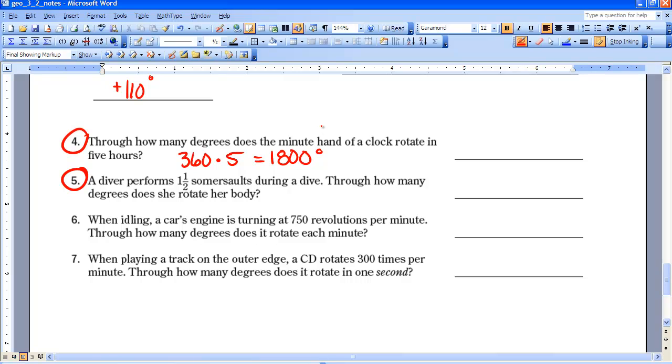And let's look at number five. A diver performs one and a half somersaults during a dive. Through how many degrees does she rotate her body? So we know a full rotation is 360 degrees. Times one and a half, that would give me 540 degrees.